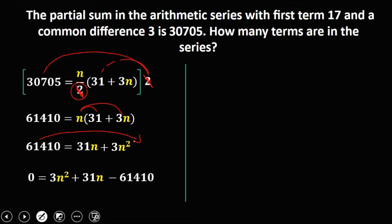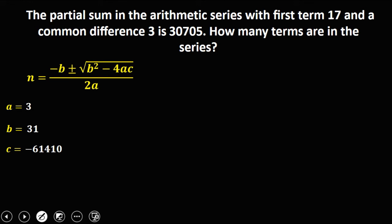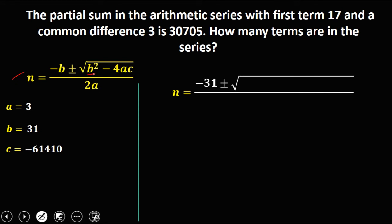From this quadratic equation, since it contains a large number, we'll use the quadratic formula to solve for n. From the equation, a equals 3, b equals 31, and c equals negative 61,410. Substituting into the quadratic formula: negative b is negative 31, then b squared is 31 squared, minus 4 times a (which is 3) times c (which is negative 61,410), all over 2a, which is 2 times 3.